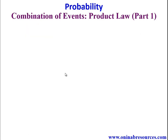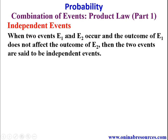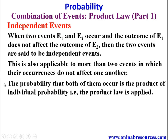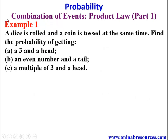We now look at independent events. When two events E1 and E2 occur and the outcome of E1 does not affect the outcome of E2, the two events are said to be independent. This is also applicable to more than two events where their occurrences do not affect one another. The probability that both occur is the product of their individual probabilities — that is, the product law is applied.